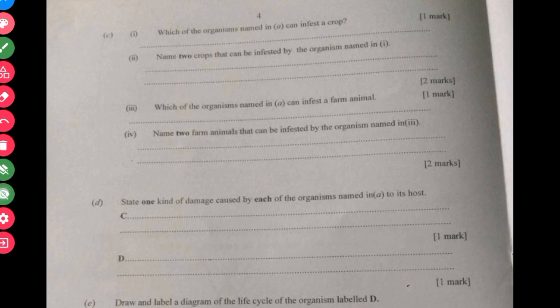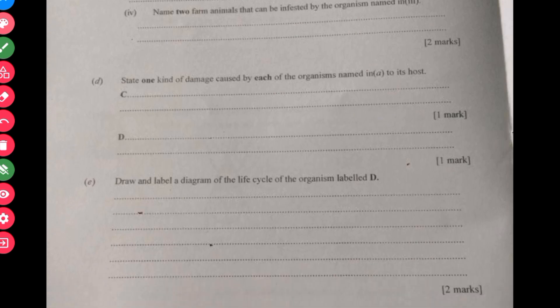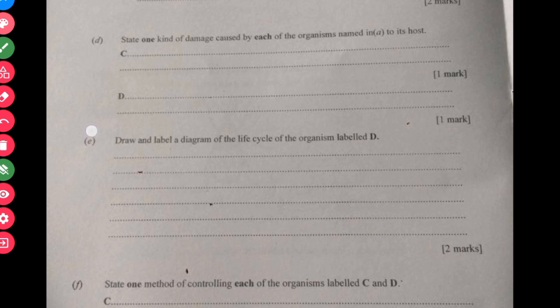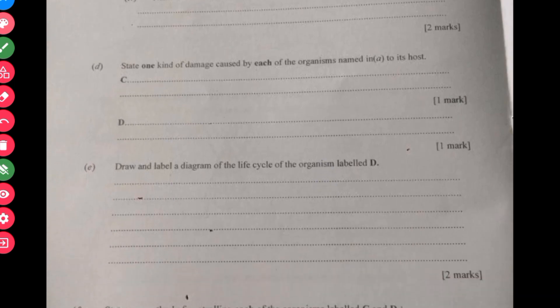You are expected to identify the organism which can infest the crop and this is very easy if you know the organism and definitely their origins. Which of the organisms named in A can infest a farm animal? Name two farm animals which can be infested by the organism named. Then name one kind of damage caused by each of the following to its host. That is for the question in A.